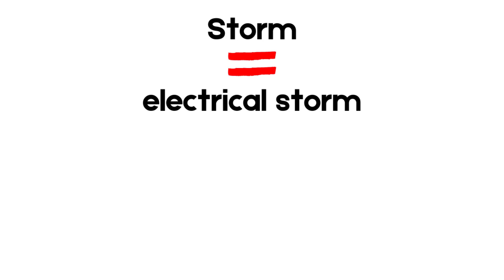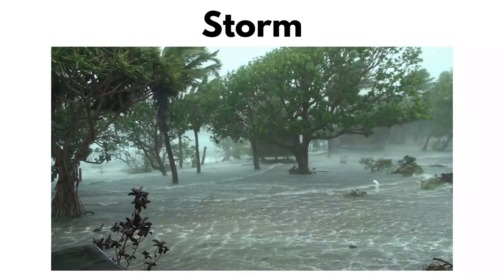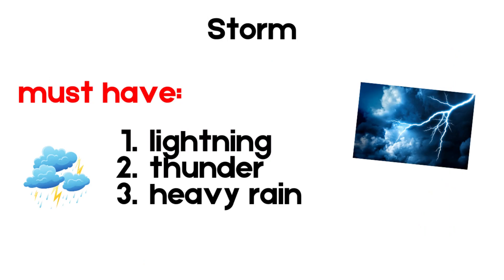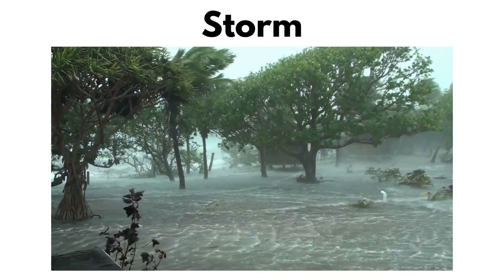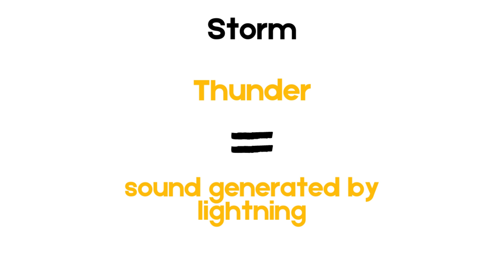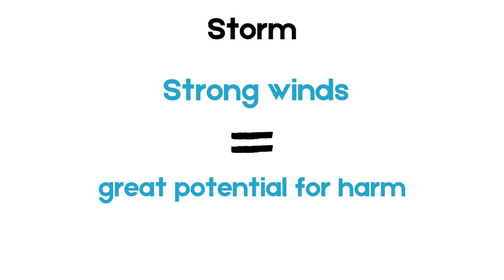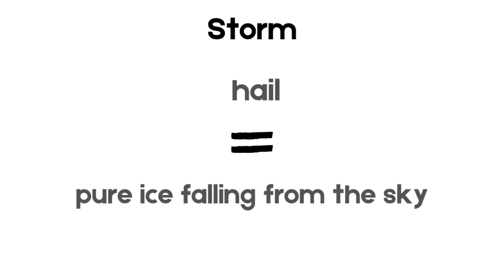Storm, also known as an electrical storm, lightning storm, or thunderstorm, is a meteorological phenomenon characterized by the presence of lightning and thunder, as well as heavy rain and strong winds. A storm typically contains the following features: lightning — sudden and intense electrical discharges caused by the separation and collision of particles within the storm cloud; thunder — the sound produced by lightning as it heats the air around it explosively; heavy rain, which can result in flooding, especially in urban areas with insufficient drainage; strong winds capable of causing damage to structures, trees, and power lines; and hail — ice pieces falling from the storm cloud that can cause significant damage.